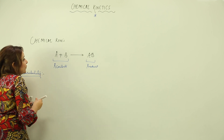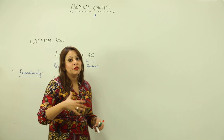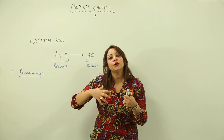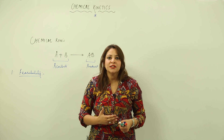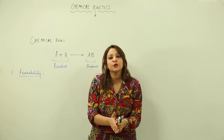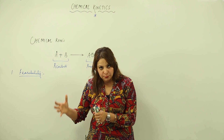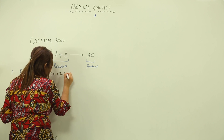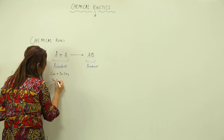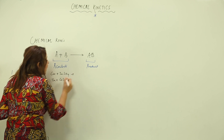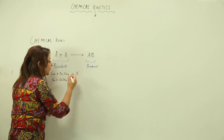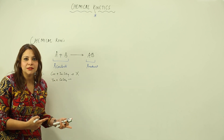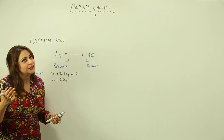What is feasibility? Whenever a certain chemical reaction is taking place, you should be aware of its feasibility — that means whether that reaction will take place or not. For example, if we add copper to zinc sulfate solution versus adding zinc to copper sulfate solution, the first reaction is not going to happen because copper is less reactive than zinc and cannot displace it. So we get no reaction. That means no reaction takes place.